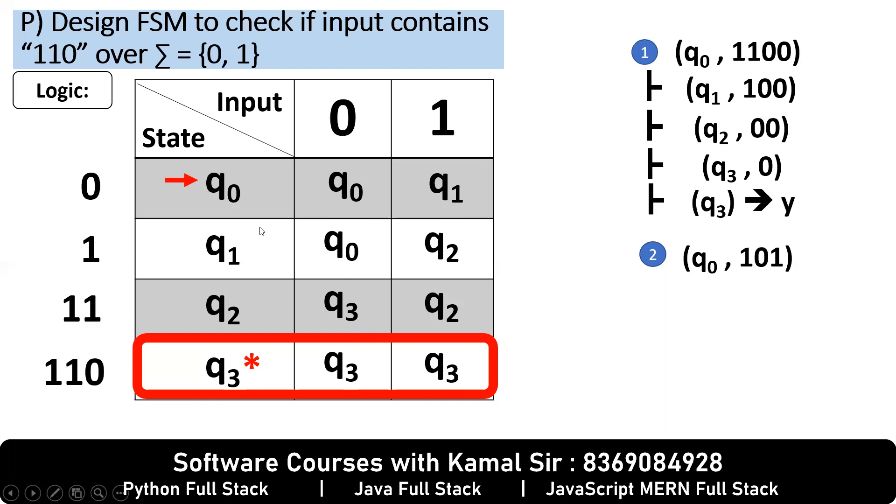Q0 on 1 is Q1. Q1 on 0 is Q0. And Q0 on 1 is Q1. And Q1 non-final, no. Yes means yes it is containing 110. No means it is not containing 110. Thank you for watching the video.